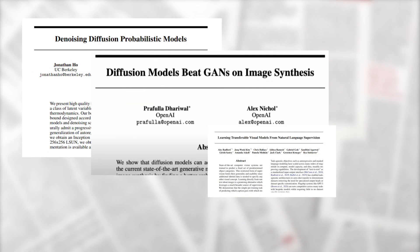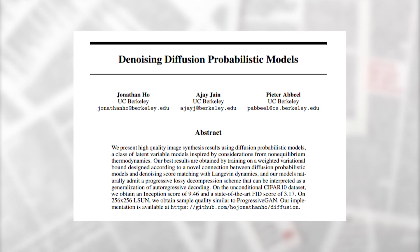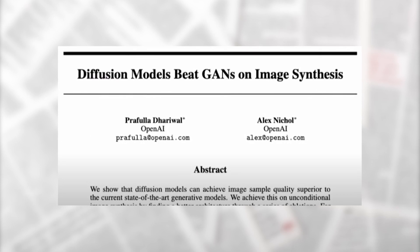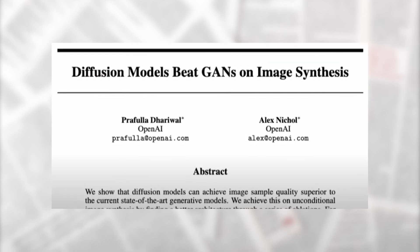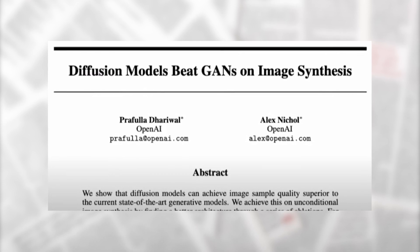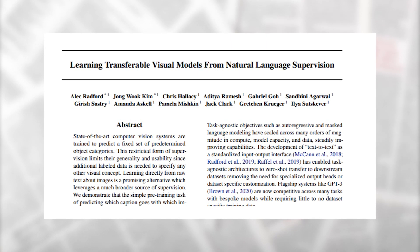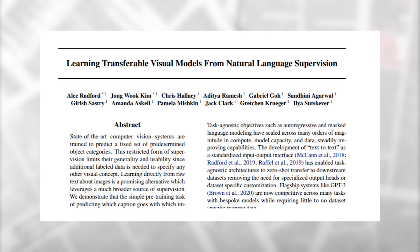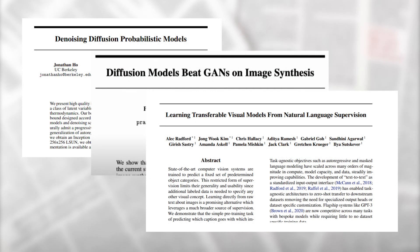Before getting started, I would like to share three papers to understand more about diffusion models. The first is 'Denoising Diffusion Probabilistic Models', which presents what high quality image synthesis with diffusion probabilistic models can do. The second is 'Diffusion Models Beat GANs on Image Synthesis', which goes deeper into how schedulers work and how you can denoise images. The third is 'Learning Transferable Visual Models from Natural Language Supervision', which covers contrastive learning losses, the CLIP dataset, and how to connect text data to image data. All three papers are linked in the description below.